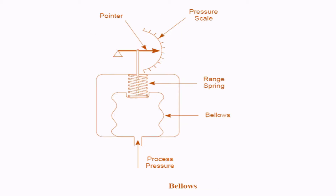Next we have the bellows type. A bellows pressure sensor looks like a small metal can with flexible sides, and a spring is attached to one end of the bellows. When pressure is applied from the bottom, the bellows contract and move the spring a distance that is proportional to the force. A pointer is attached to the spring and that indicates the pressure — this is how a bellows gauge works.